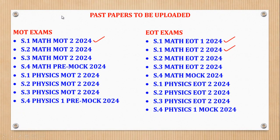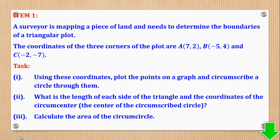The text shows our progress, what we have uploaded so far, and what is not yet ticked shows what we are yet to upload. We will start with Item 1. Item 1 says a surveyor is mapping a piece of land and needs to determine the boundaries of a triangular plot.